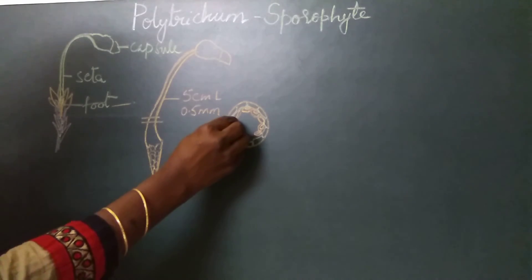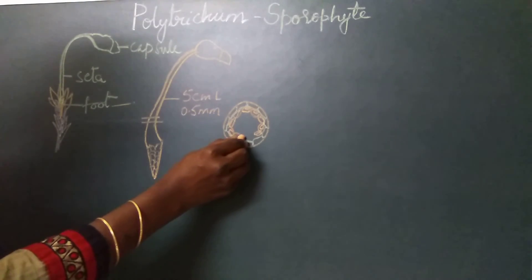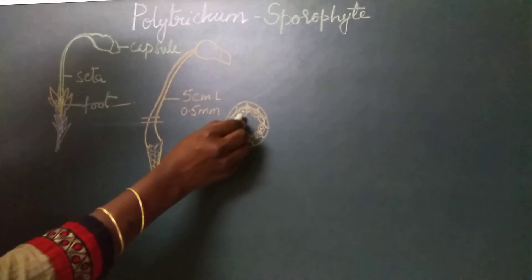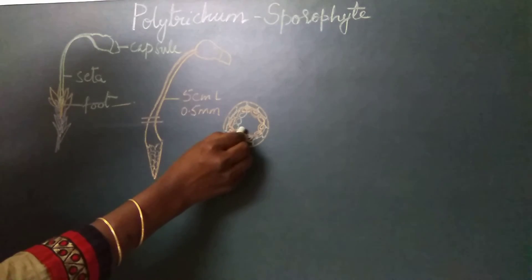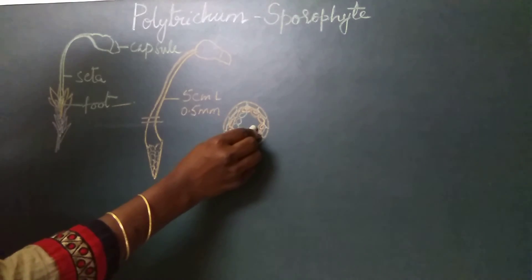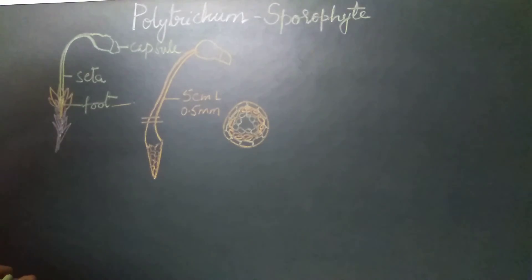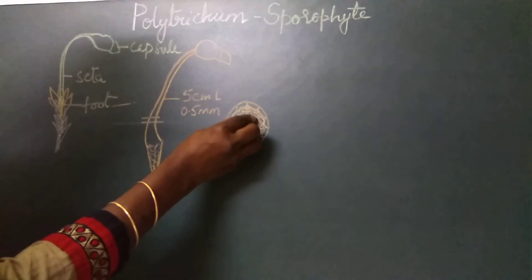Following the sclerenchymatous hypodermis, we find the cortical region which is thin-walled parenchymatous cells, and in the center is the central strand.